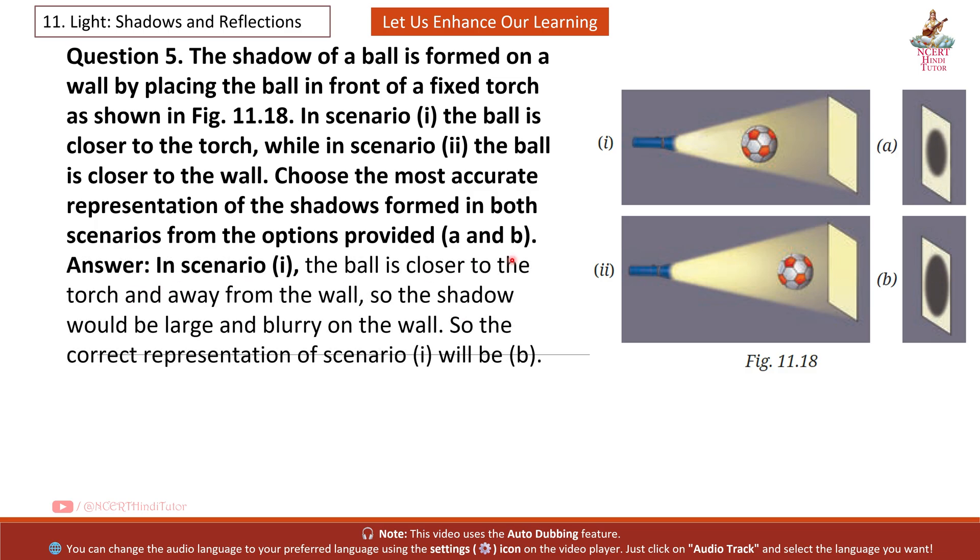Answer: In scenario 1st, the ball is closer to the torch and away from the wall. So the shadow would be large and blurry on the wall. So the correct representation of scenario 1st will be B.